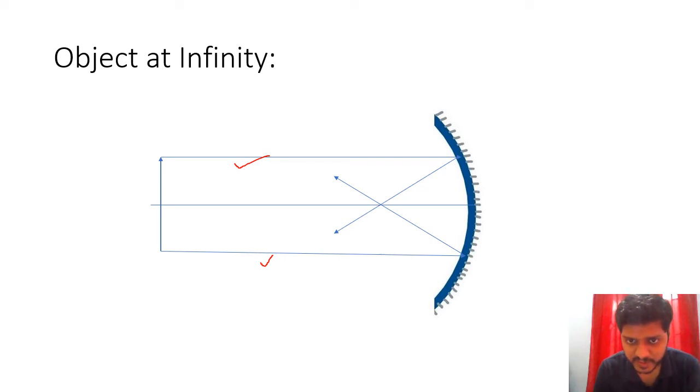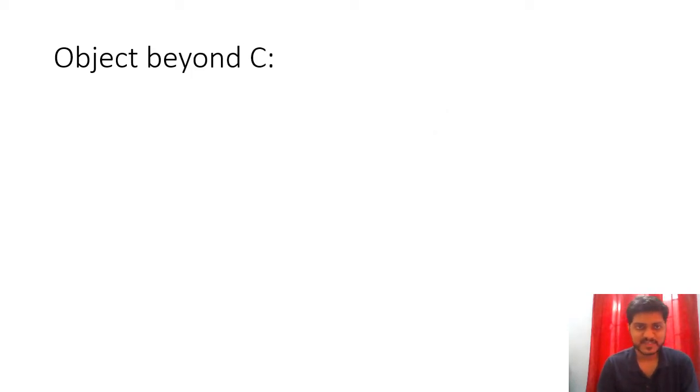So we know that this particular point is going to be focused. And let us suppose that here somewhere is our center of curvature. So all the rays which are falling to this spherical mirror, let us assume that they are parallel to the principal axis. So they will form an image on the focal point. So this is how.